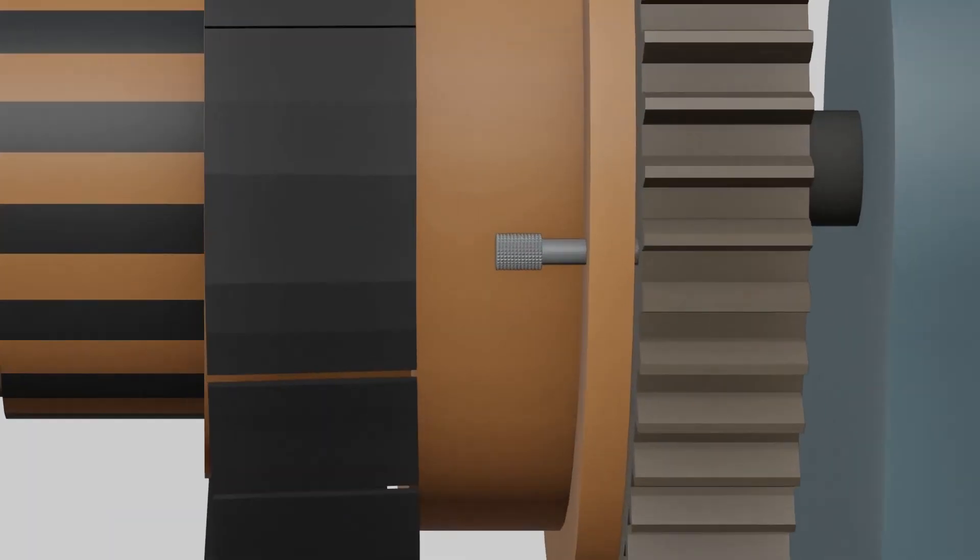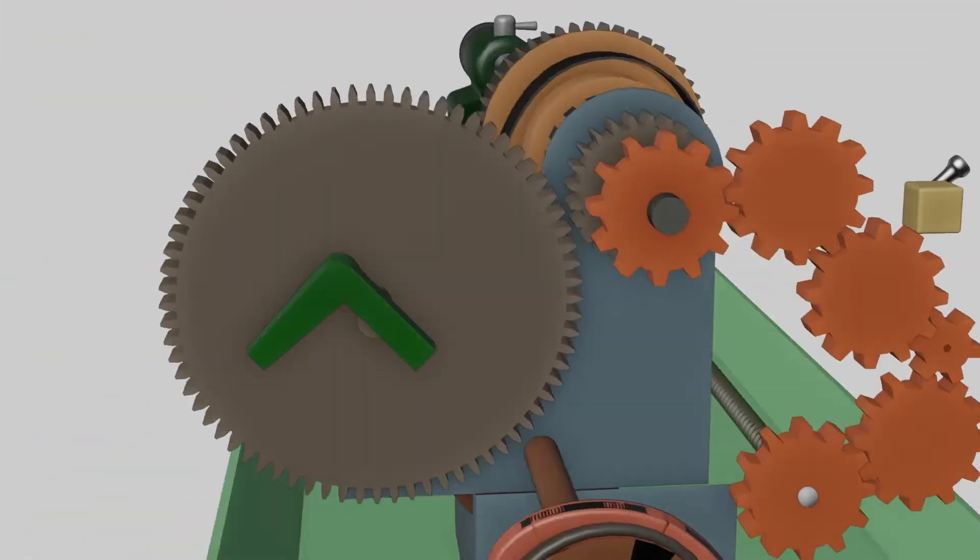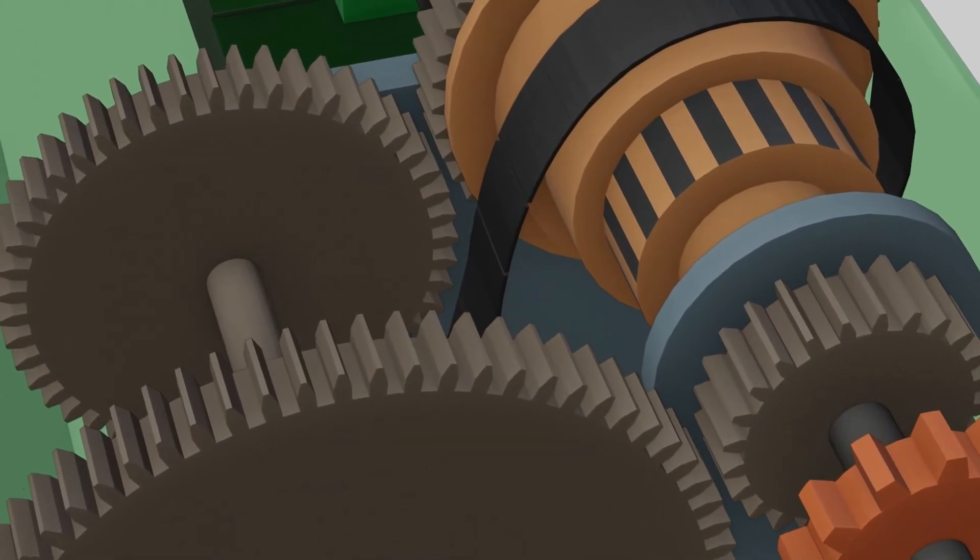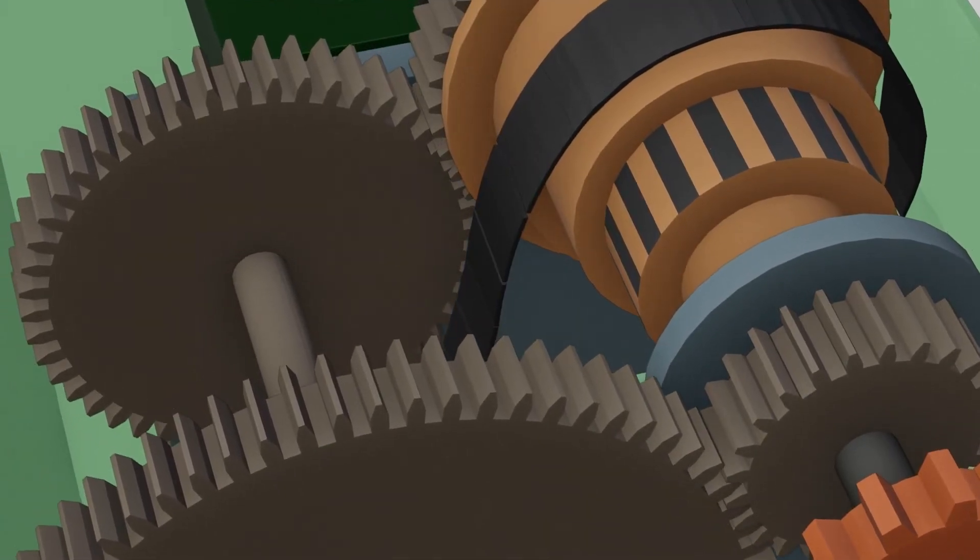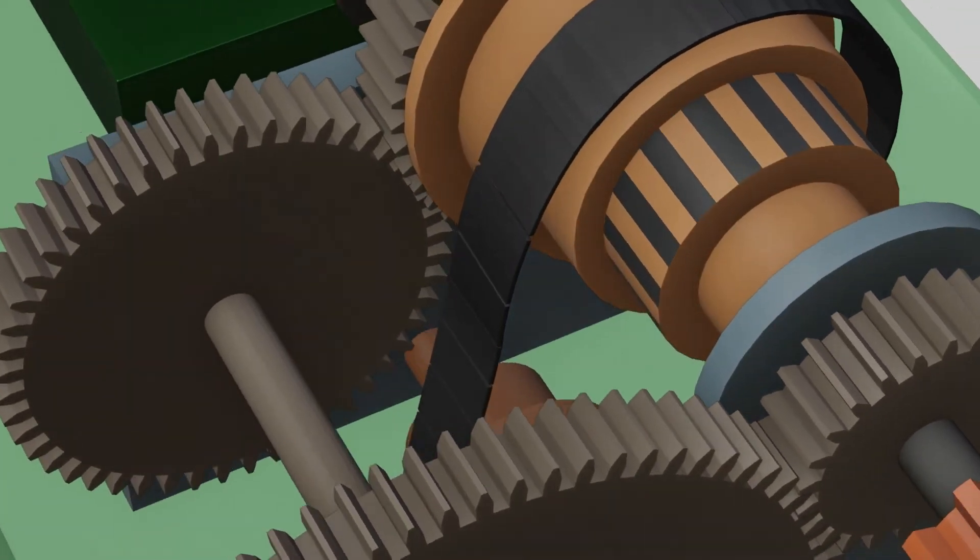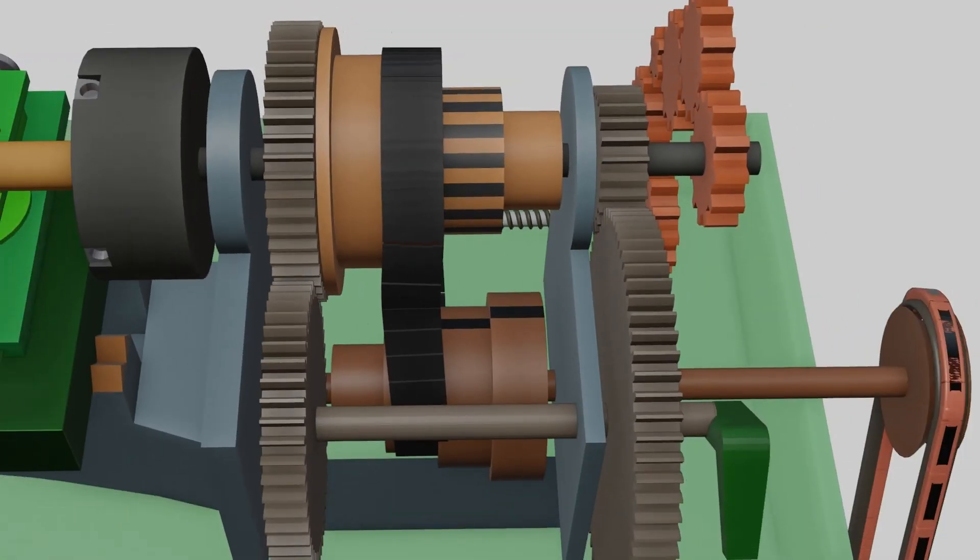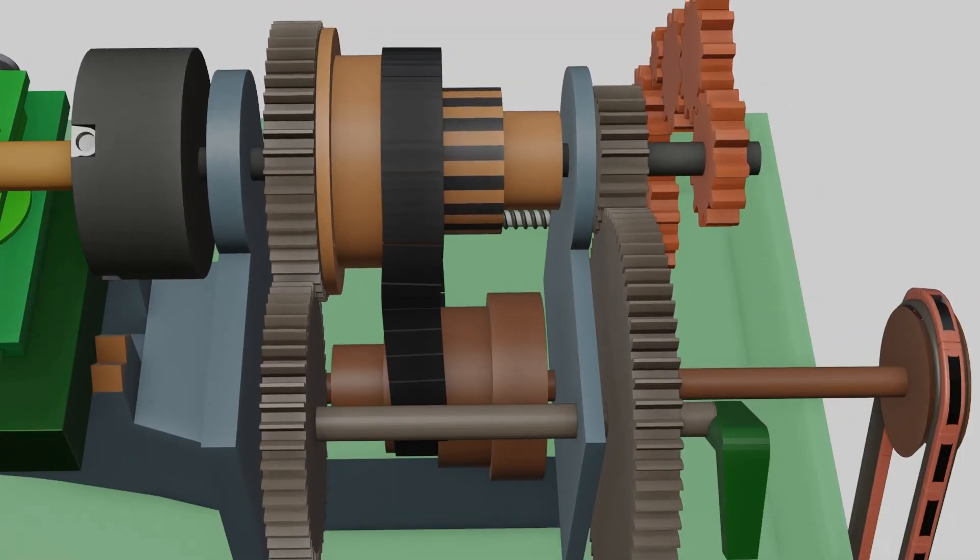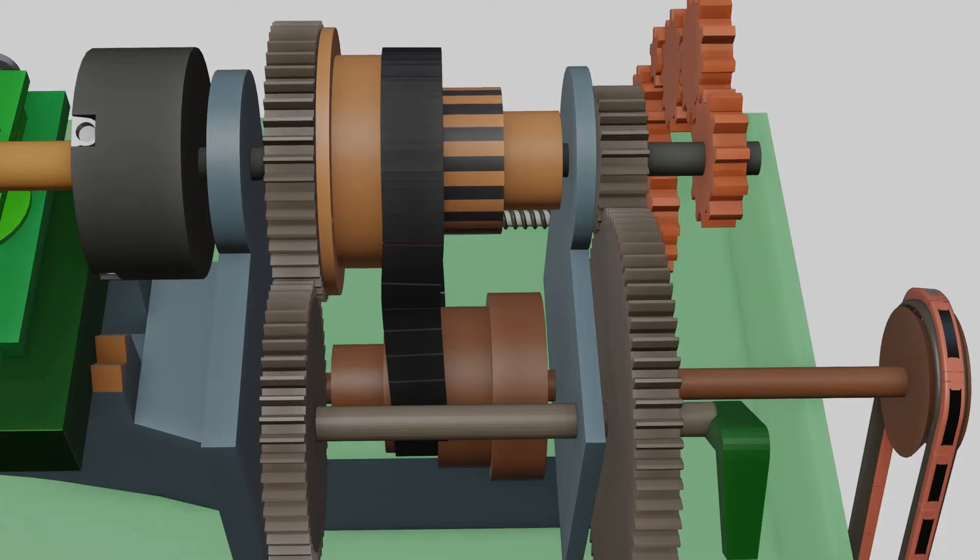For back gear mechanism, detach spindle and step cone pulley. Engage back gears to the spindle gears. Now rotation transfers from A to B, B to C, C to D.